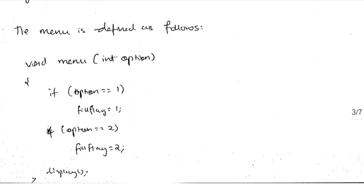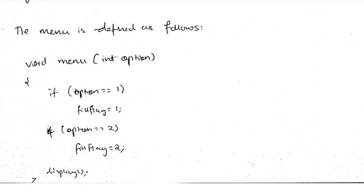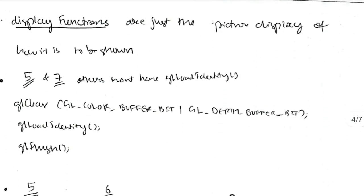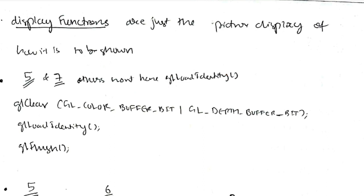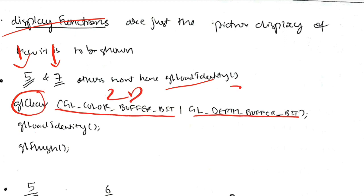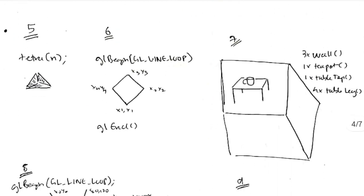In the init function, you set the background color, set the pen color, set the pen size — defining the frame and making the pen ready — then gl_matrix_mode GL_PROJECTION, gl_load_identity, and gl_ortho_2D to set the window size. This is the same across those three programs. Regarding the menu function, which exists for Scanline Fill and Bezier Curve: it takes an option parameter — if option is 1, fill_flag equals 1; if option is 2, fill_flag equals 2 — then the display function is called.